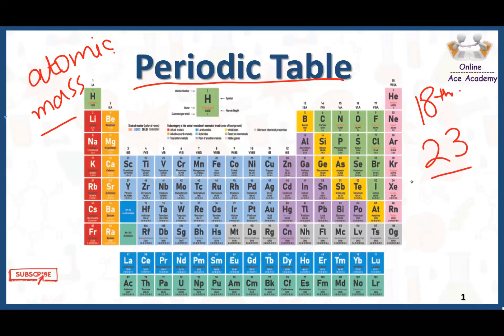Later on, there was a scientist who gave the idea of atomic number and arranged all the elements discovered up to that point in the periodic table according to increasing atomic number. The table arranged in this way is called the modern periodic table.